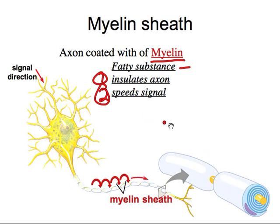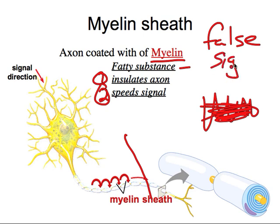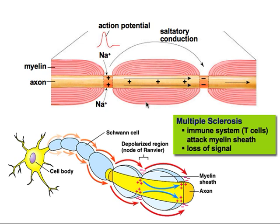Myelin insulates the axon, which is very important — in electronics, you don't want two wires to touch because that causes a short circuit. The same thing happens if two axons were to touch: that would create a false signal or false communication, which we don't want. The second thing myelin does is speed the signal. The conduction of sodium ions is actually able to jump over the myelin sheath and start the action potential further along the axon.